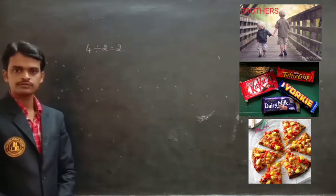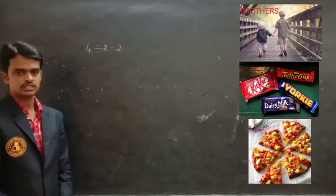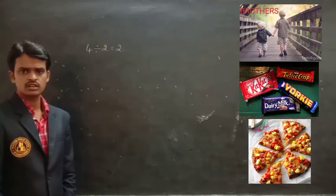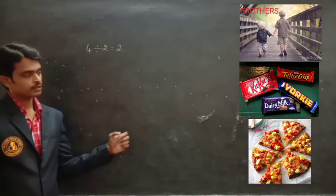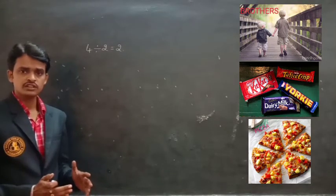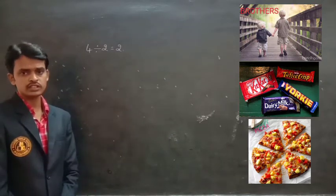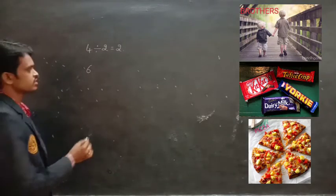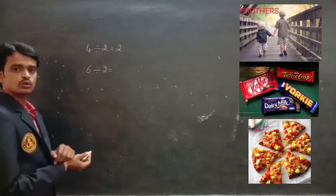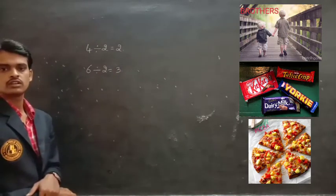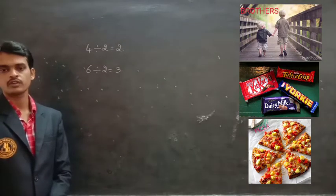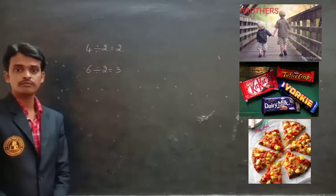Look at the picture. One more picture we have here. It is a pizza. So this pizza — if you want to distribute between 2 brothers, look at the image. The pizza is divided into 6 parts. So these 6 parts we have to divide for 2 brothers. Then 6 is divisible by 2 — 3 times. So each brother gets 3 pieces of pizza.